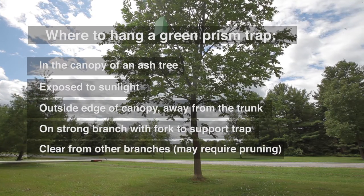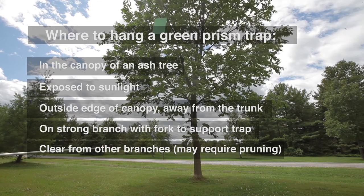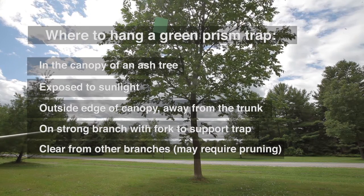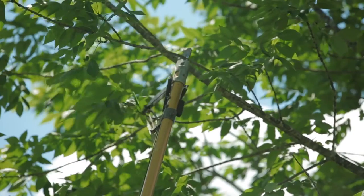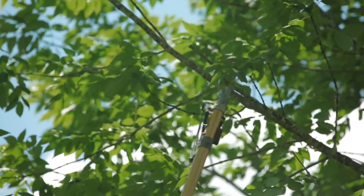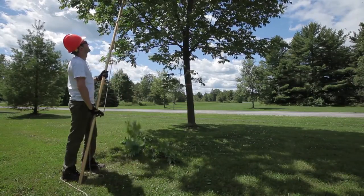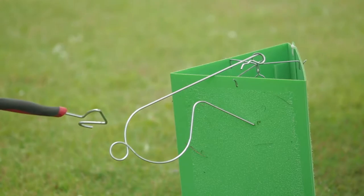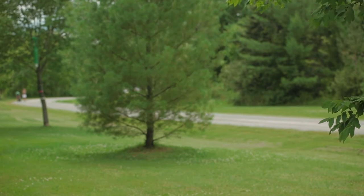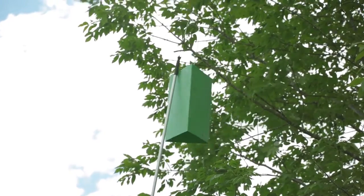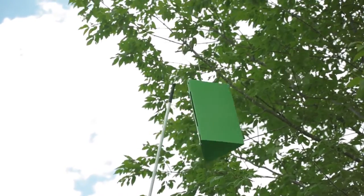Sometimes that requires cutting some branches out of the way to make a little spot for the trap to hang so that it's not swinging and connecting with the branches or leaves beside it, because those will rub off the insects that get stuck on the trap. I use pole pruners or a pruning saw to cut some branches out of the way, then find a branch with a fork in it to stop the trap from sliding. Using a painter pole with a hook on the end that attaches to an R hook on the trap, you lift the trap into the canopy, put the R hook over the branch, and come back about two weeks later to look for insects.